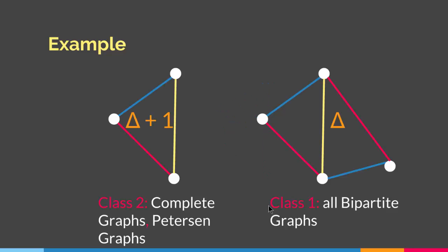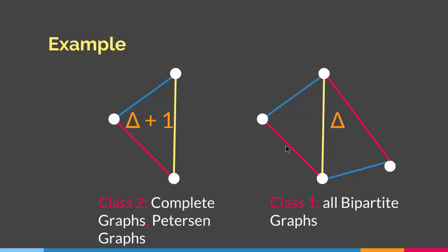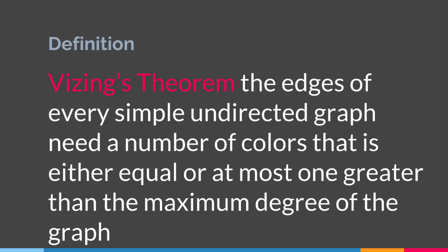We have graphs that need delta plus one colors and graphs that need only delta colors to properly color the edges. Simple undirected graphs, based on Vizing's theorem, fall into two classes. Class one — all bipartite graphs — need delta colors. Class two — graphs like complete graphs and the Petersen graph — need delta plus one colors. The edges of every simple undirected graph need a number of colors that is either equal to or at most one greater than the maximum degree of the graph. With this we come to the end of this lecture.